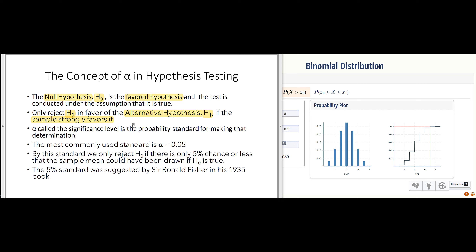What do we mean by strongly favoring? We have this value usually called alpha, which is the significance level of the test. The alpha most commonly used in statistical analysis is 0.05. Why do we use 0.05? Basically because 0.05 is what Ronald Fisher recommended in his book.